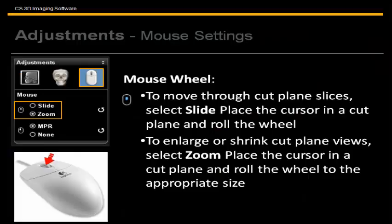Please note, you can click on Mouse Settings in the upper left under Adjustments to change the active setting for your mouse wheel. Choose Slide to use your mouse wheel to scroll slice by slice through any cut plane, and choose Zoom to use your mouse wheel to zoom in or out when scrolling.